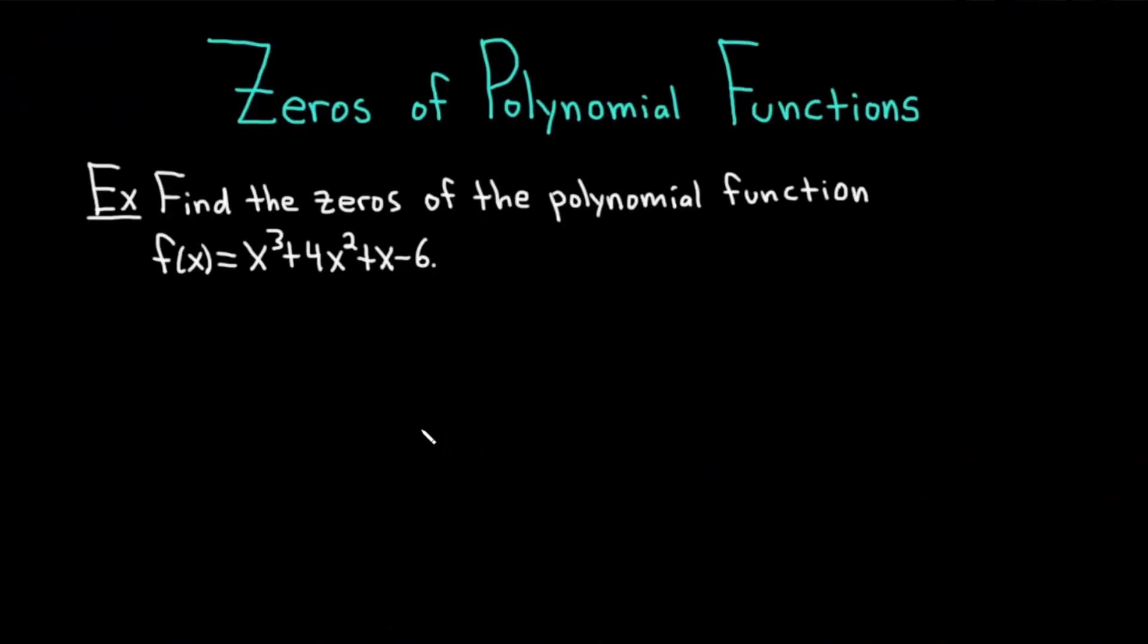Hi, everyone. It's the MathSorcerer here with Chegg. In this video, we're going to be discussing zeros of polynomial functions. Our example is to find the zeros of the polynomial function f(x) = x³ + 4x² + x - 6. Let's carefully work through it.